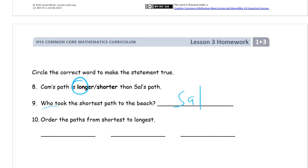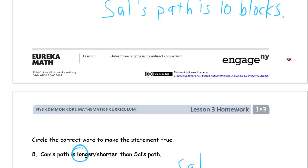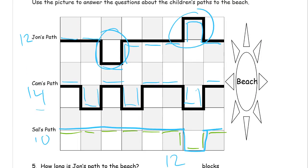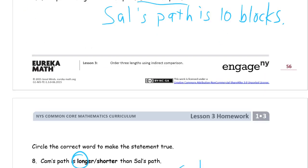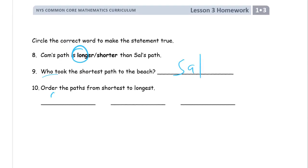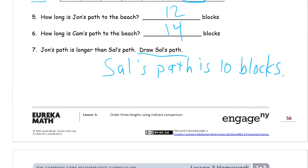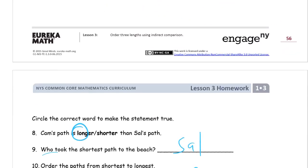And order the paths from shortest to longest. And I'm going to do this by name. So shortest would be Sal's first. And then the longest is Cam's. So John's will be in the middle. So it's going to go Sal, John, Cam. And let me see if I spelled John's name right. Yep. J-O-N. Good.